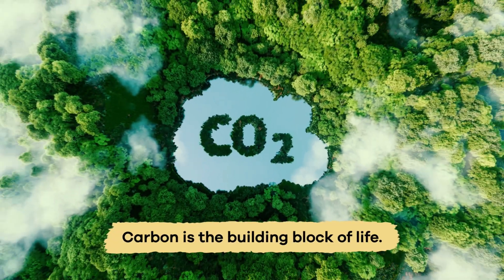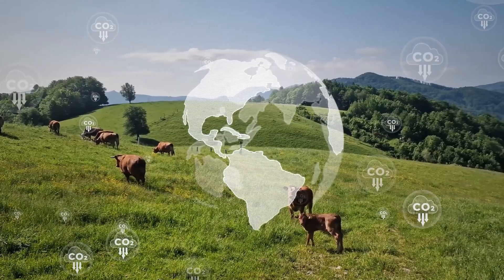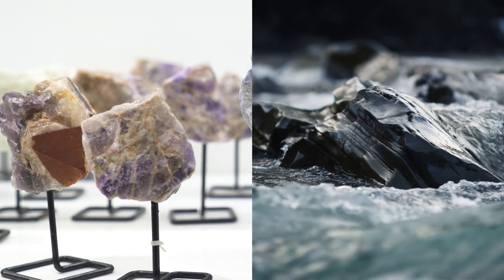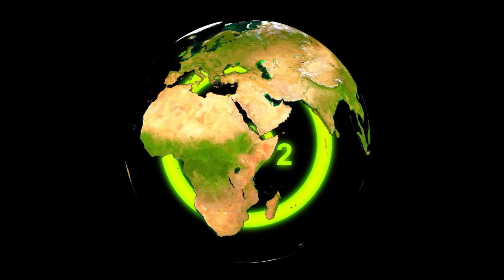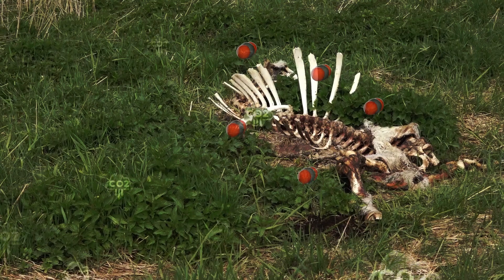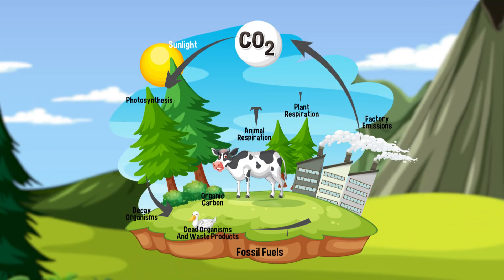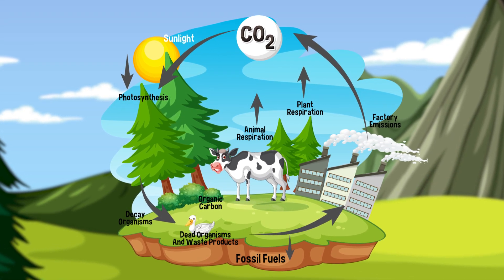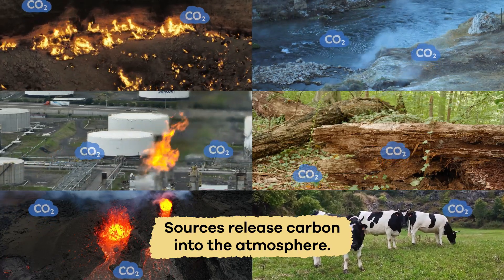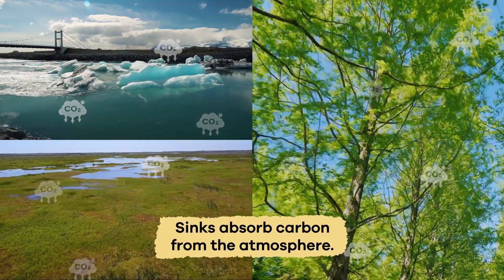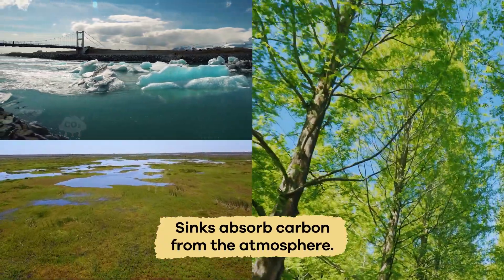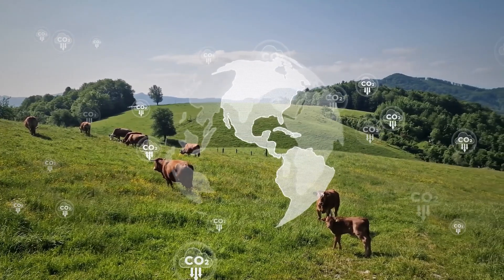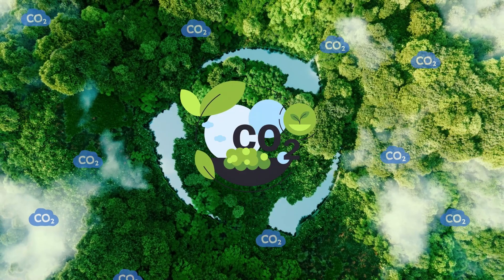Carbon is the building block of life. It is important for the existence of nearly all organic and inorganic material on earth. Carbon moves around the earth and is exchanged between living things, dead things, and the air through a process called the carbon cycle. This cycle includes sources that release carbon into the atmosphere, sinks which absorb carbon from the atmosphere, and reservoirs that store carbon. There is not a specific starting or ending point to the carbon cycle.